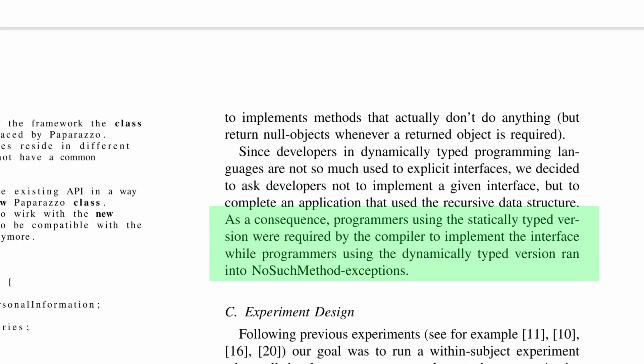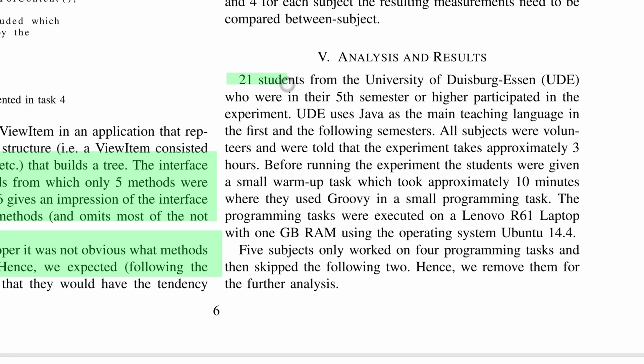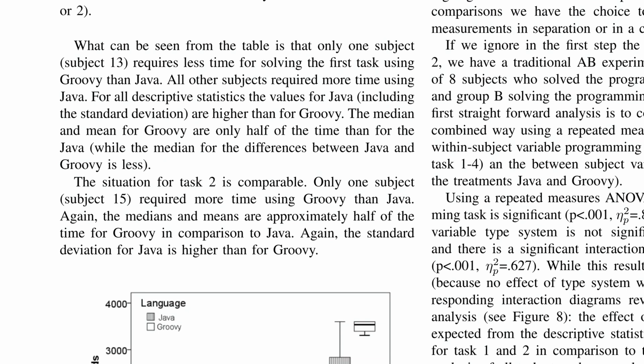This means that to solve this in a statically typed language, you would have to implement all 26 methods, whereas in a dynamically typed language, you could implement only the methods you thought were required — and if you happened to call a method you had not implemented, you would get a runtime 'no such method' exception. They performed this experiment with 21 undergraduate students from the university, using Java as the statically typed language and Groovy as the dynamically typed language.